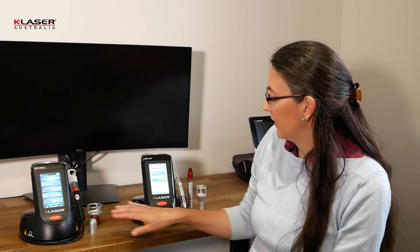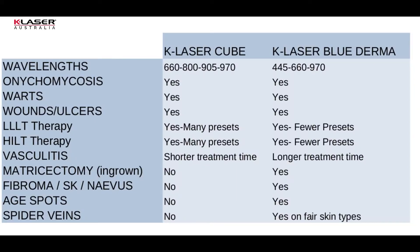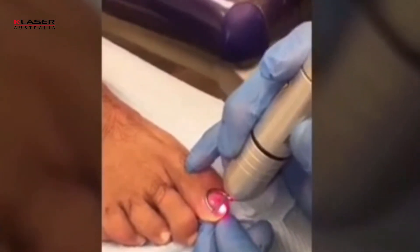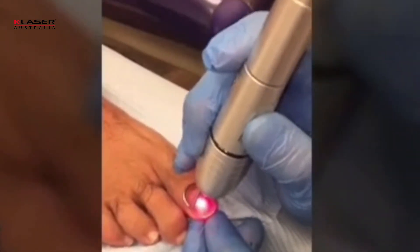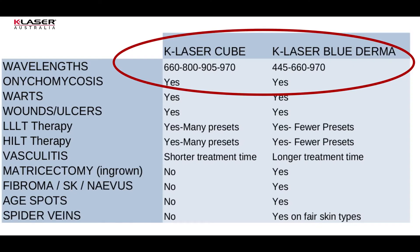On the other hand, if your focus is on laser therapy for sport injuries and onychomycosis, and you are keen on using it for plantar warts and occasional surgery, then the K-Laser Cube series is your best choice. You can first note that both models look similar; however, the wavelengths and the technology are different, which explains the type of applications available. For onychomycosis, you can choose either model — both are designed to treat through heat. The K-Laser Cube uses all four red and infrared wavelengths, whereas the K-Laser Blue Derma uses an infrared wavelength combined with the blue 445 nanometer wavelength. The advantage of the blue wavelength is its antimicrobial property, which is useful when treating any type of infection.